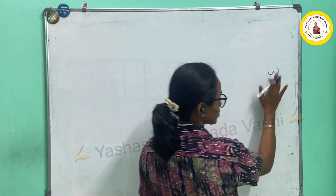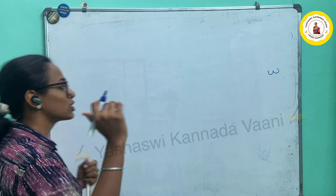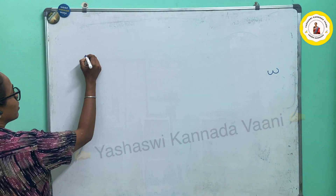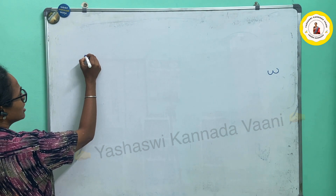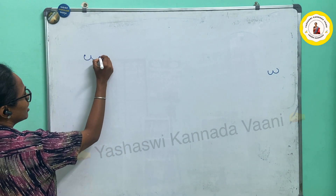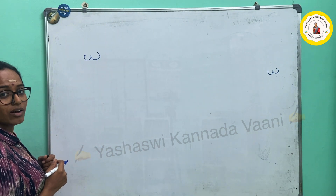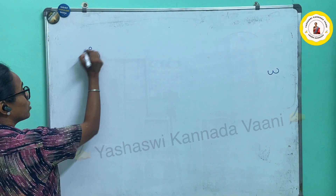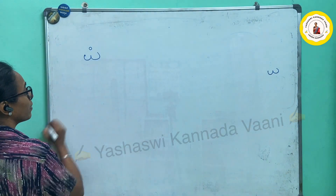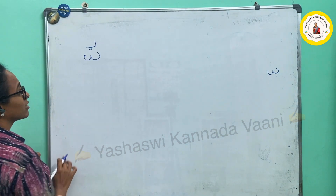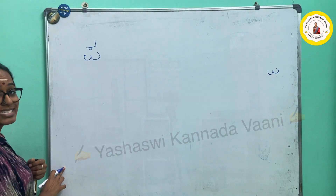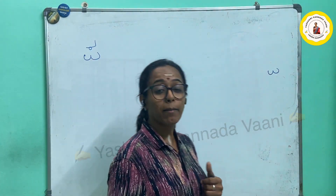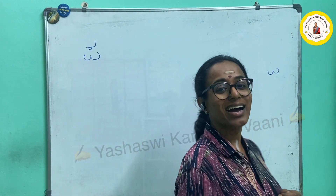So this is what I want — W. Start with this one with a small circle. Now put a zero. This is letter PA.